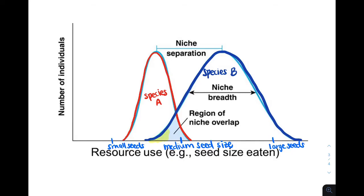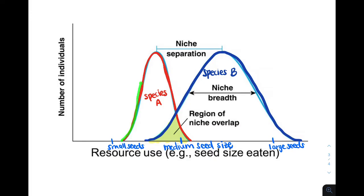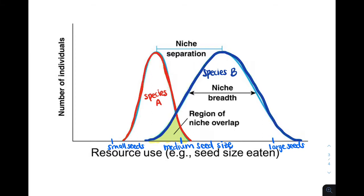Notice how the graph shows a region of overlap between species A and species B — both species can eat medium-sized seeds. In this region of overlap the species are going to compete, but in order to reduce competition, the species are going to separate their niches. For example, species A might occupy only a smaller range of resources, and species B might occupy a different range. Notice how the species try to reduce niche overlap by partitioning their resources.